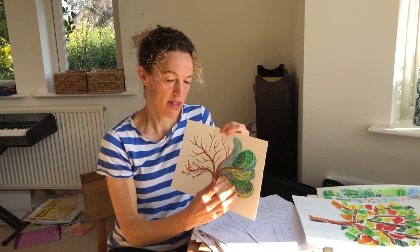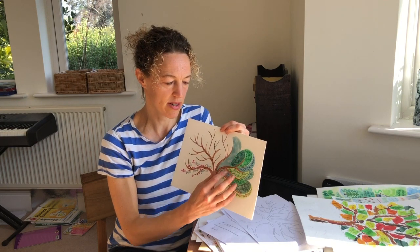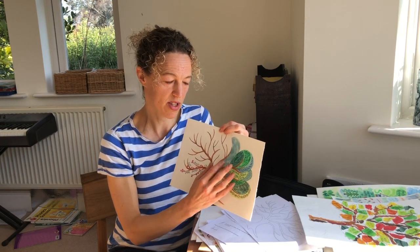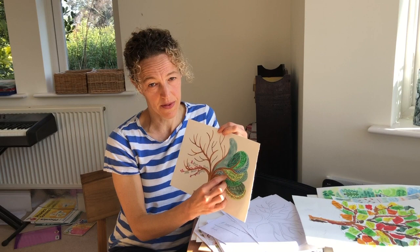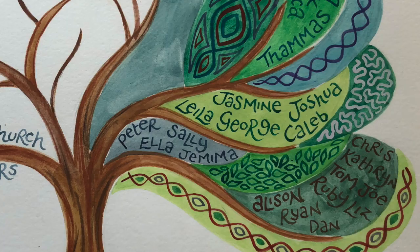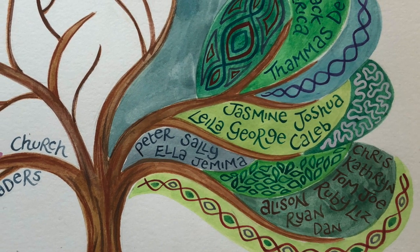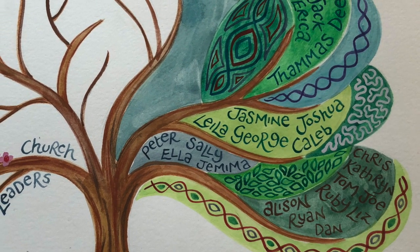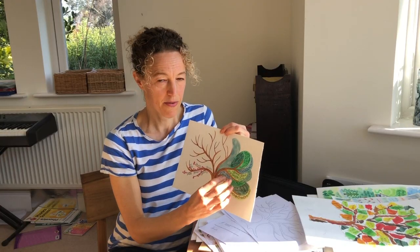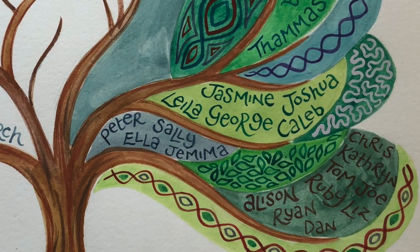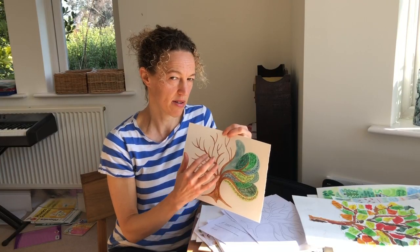The next stage was filling those sections with different shades of green that contrast with each other. Having done that, I began to fill parts of those sections with the names of people, choosing a text colour that contrasts with the background. The remaining bits I filled with decoration and detail. That's one way you might approach the design.